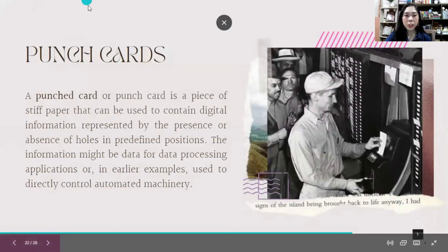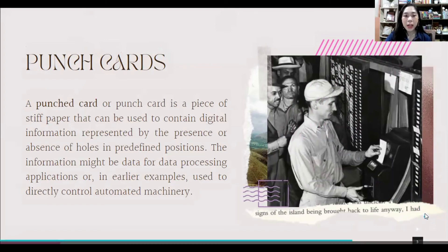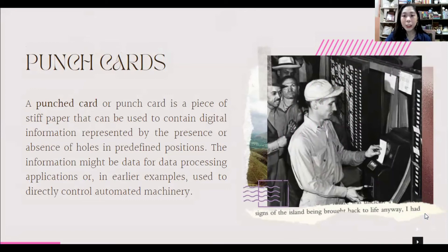Punch card: A punch card is a piece of stiff paper that can be used to contain digital information, represented by the presence or absence of holes in predefined positions. The information might be data for data processing applications or, in earlier examples, used to directly control automated machinery. Punch cards began in 1801, where Joseph Marie Jacquard first demonstrated his programmable textile loom. Jacquard's loom was considered one of the earliest forms of programming, giving it the title of predecessor to modern computing. During the 1820s, Charles Babbage proposed an analytical engine that could perform mathematical calculations when fed information using punch cards, using many components now fundamental to modern computers.